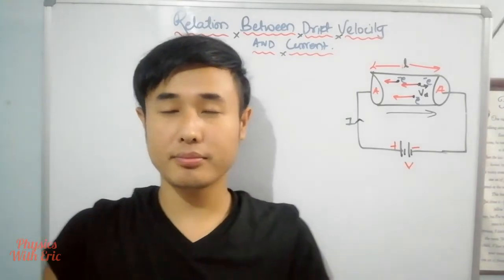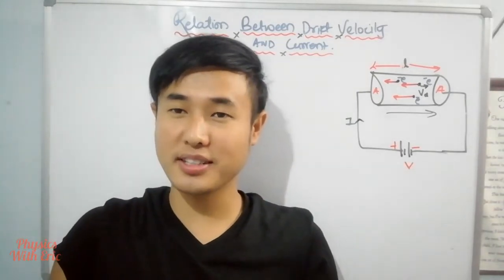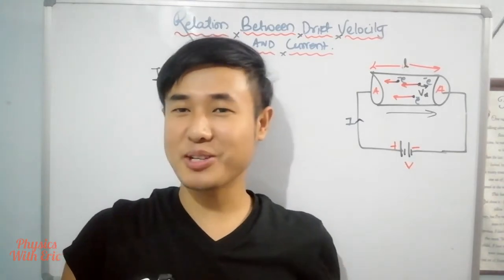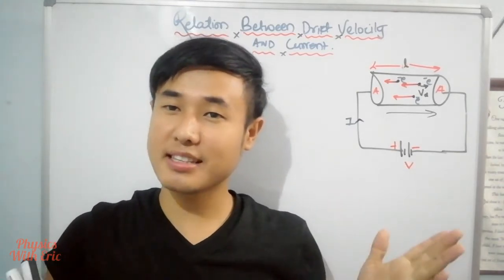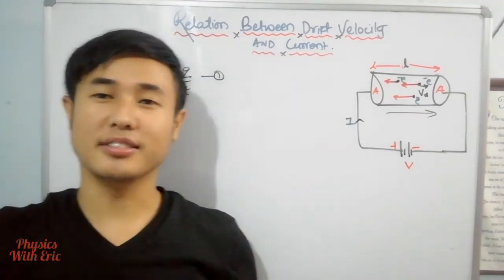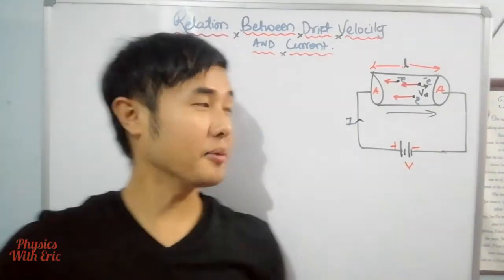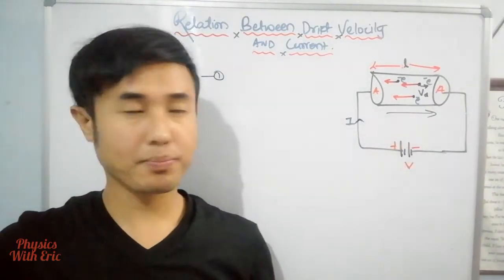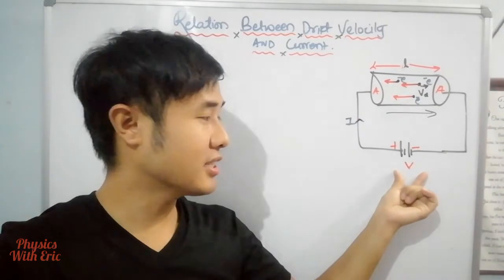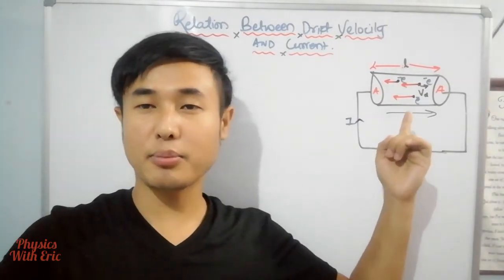If you haven't watched the drift velocity video, please check the link in the description. So without any further delay, let's go to the relationship between drift velocity and current. I'm drawing a conductor which has free electrons, and when we apply a potential difference across the conductor, the free electrons move.